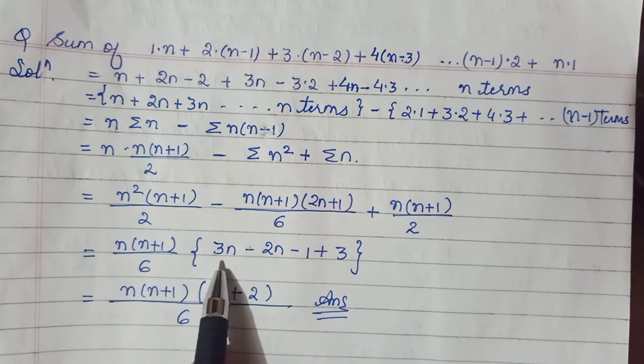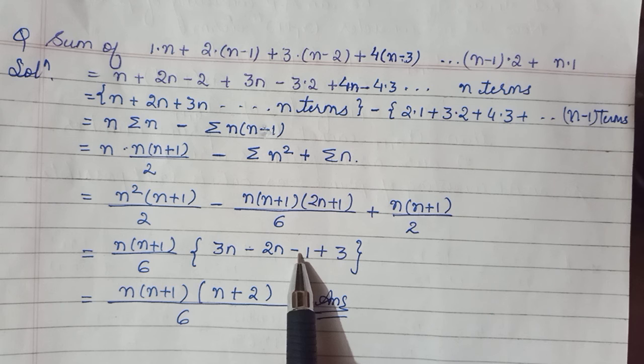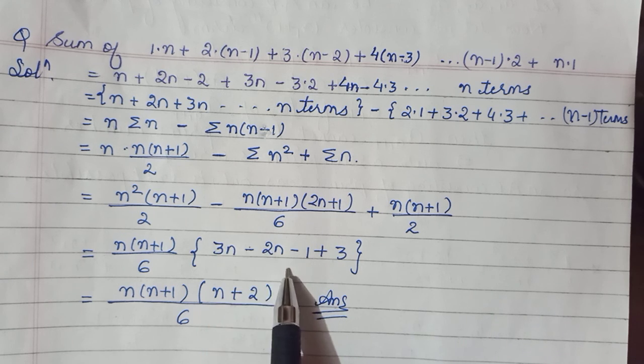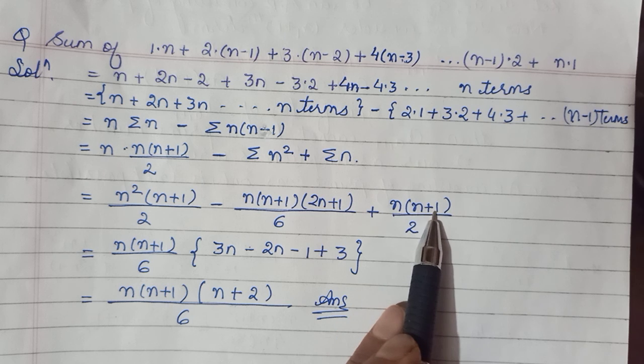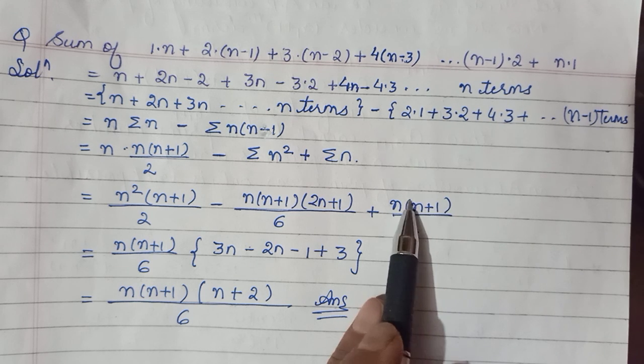And 3 came, so 3n. And here only 2n + 1 minus 2n - 1.